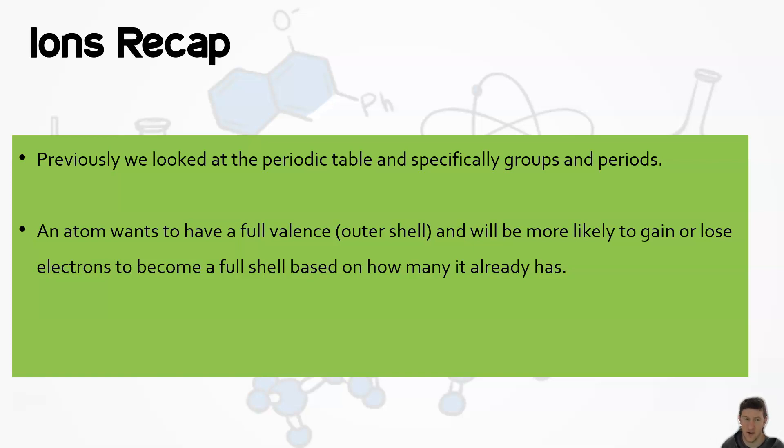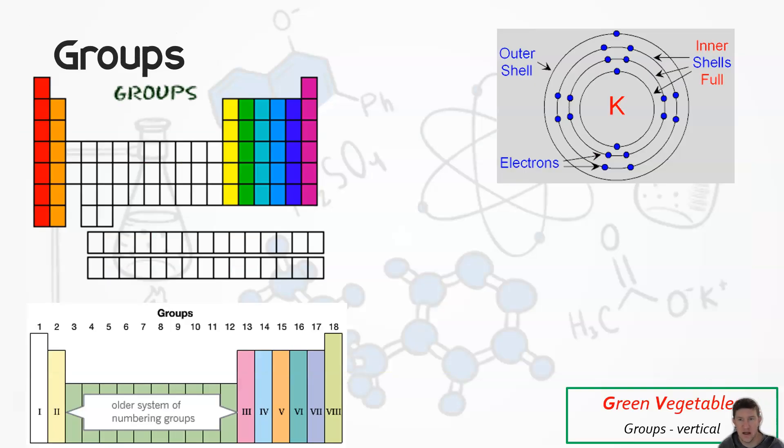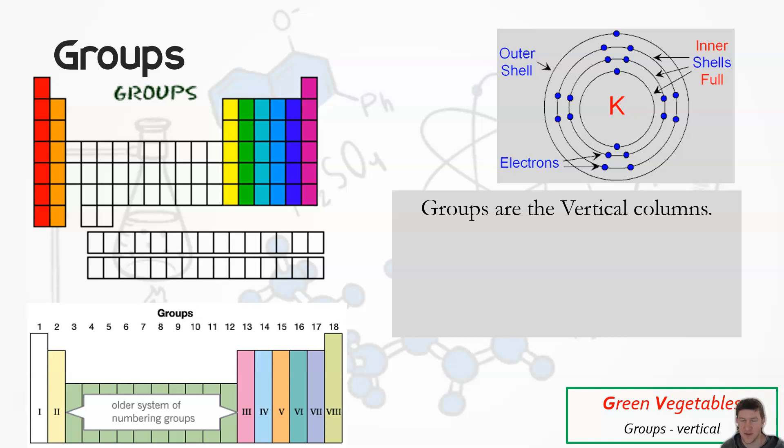So groups, just to recap, groups are the vertical columns. Remember we had the acronym green vegetables are very healthy? So GV - green vegetables, green groups are vertical.